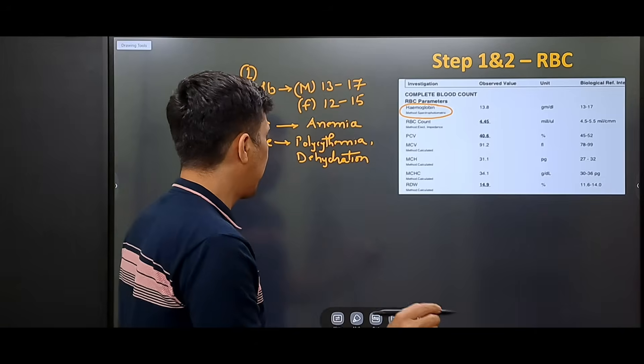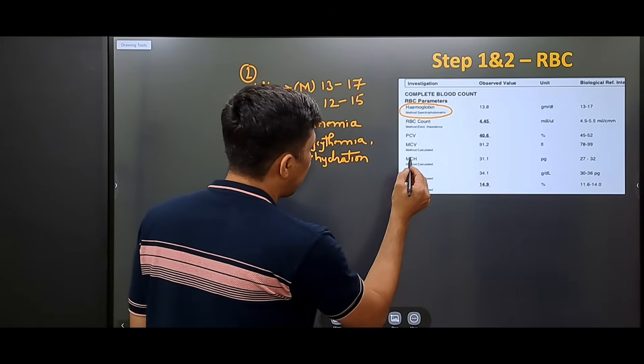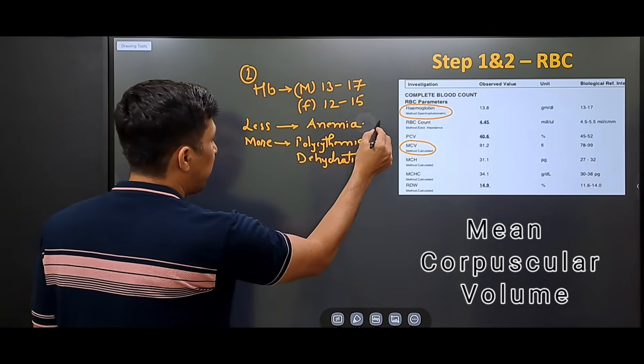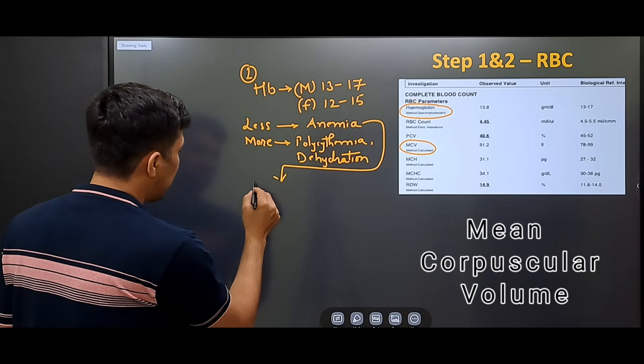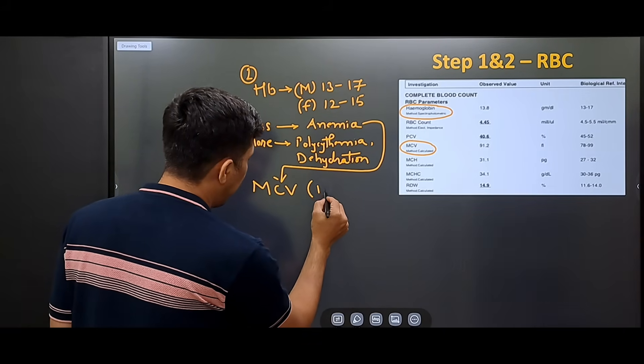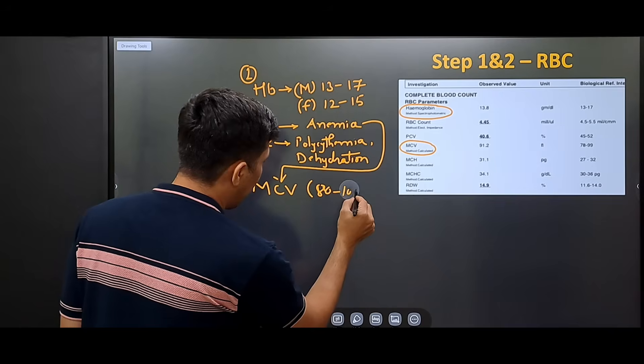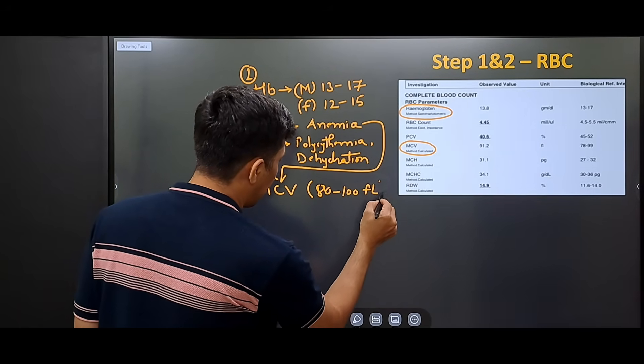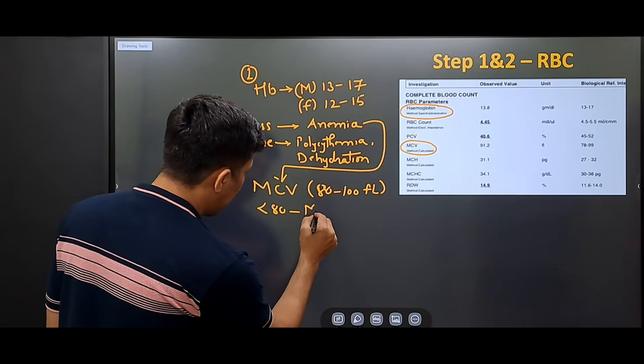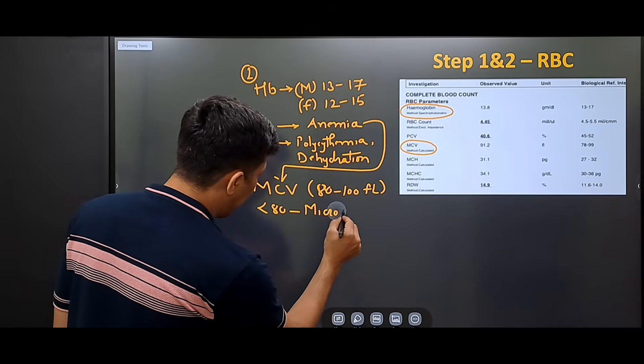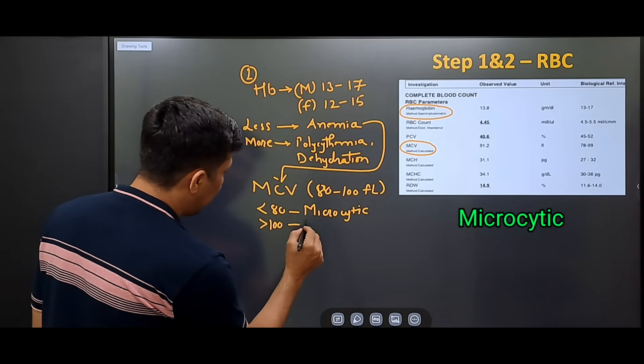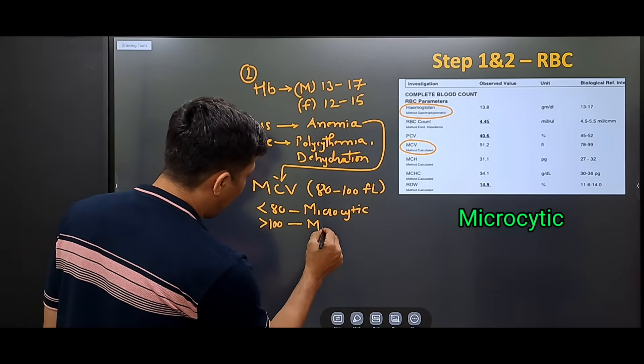If there is an anemia, then we see the next parameter that is the MCV. The normal level of MCV is 80 to 100 femtoliters. If MCV is less than 80, then the anemia is microcytic. If it is more than 100, then we call it as macrocytic.